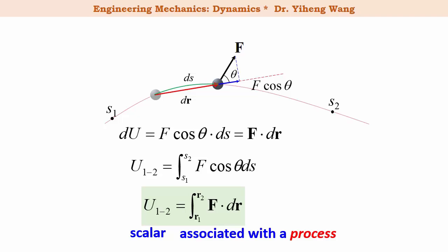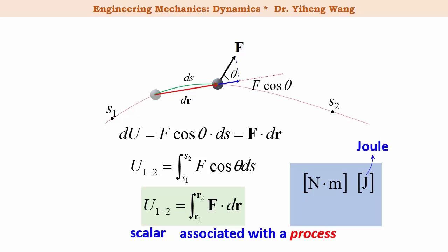In the SI unit system, the unit of work is newton times meter — one newton times one meter equals one joule. In the US customary system, the unit for work is foot-pound, which is written this way to be distinguished from the unit pound-foot, which is the unit for moment.